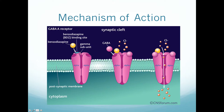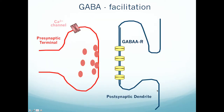A benzodiazepine binds to its specific slot between the alpha and gamma subunits. The same action occurs as with GABA: the pore opens, chloride enters, and the cell hyperpolarizes. Benzodiazepines are therefore facilitative of GABA function — they enhance GABA activity. Whenever there's general brain excitation, GABA facilitation quiets down neurons.